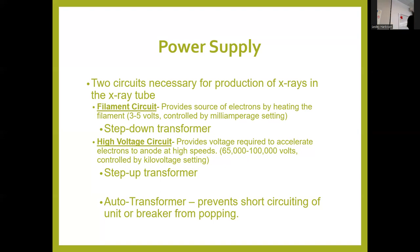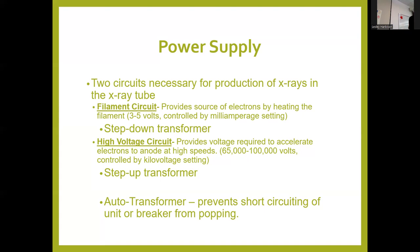When you push the button you need high voltage to accelerate the electrons across to the anode. A high voltage circuit provides the voltage required to accelerate electrons to the anode at high speed — you need 65 to 100,000 volts, way more than 110 coming out of the wall. So because you're going from 110 up to 65 or 100,000 kilovolts, you need a step-up transformer. There's also an auto transformer that basically evens everything out, keeps things from short circuiting, and prevents extreme voltage variations from popping a breaker.